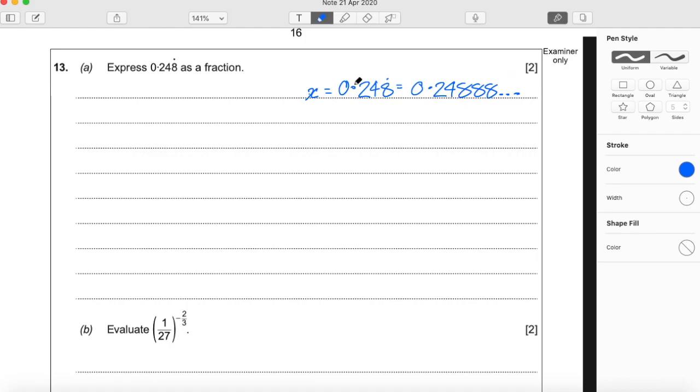So what we want to do is move this decimal place to the first point where the number starts recurring. And we can see that's here because to the right of the decimal point will just be 8 forever. So we need to move the decimal point two places to the right.